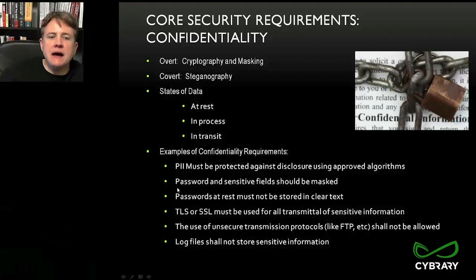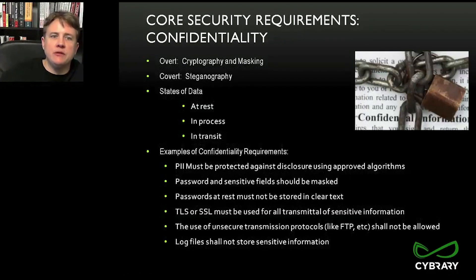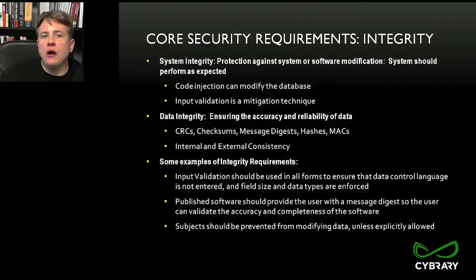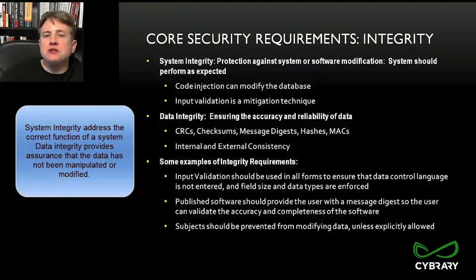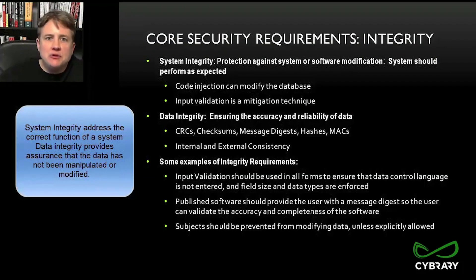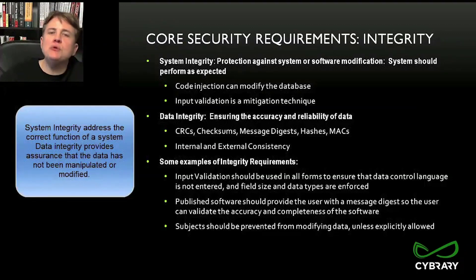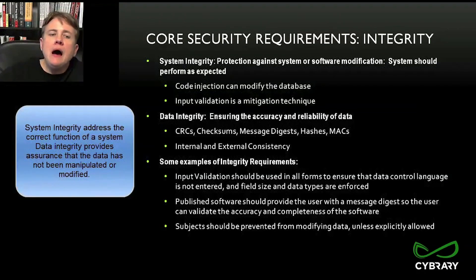Those are various examples of confidentiality requirements — how we address the needs for privacy in our software. The next CIA triad requirement is integrity. How are we going to protect against modification of the system, modification of the data, and making sure the system performs as it should? When we talk about system integrity, we ensure internal and external values are consistent and protect against code injection — a huge problem any time we allow user input.